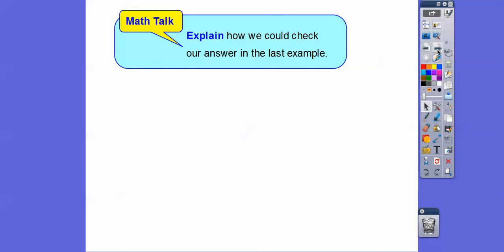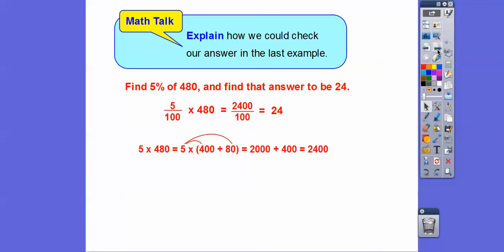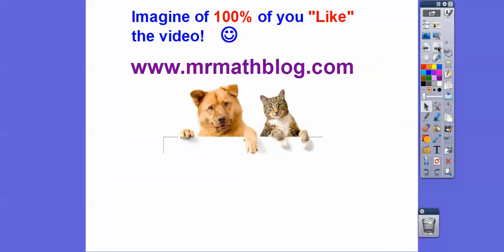Explain how we could check our answer in the last example. We can find 5% of 480 and find that answer is 24. Remember, 5% is 5 one-hundredths. So 5 one-hundredths times 480, 5 times 480 is 2400. So 2400 over 100, and the zeros cancel out, and we get 24. All right you guys, hope that lesson makes sense, and take care.